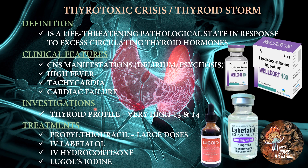The investigation for thyroid toxic crisis is a thyroid profile, in which we can see very high levels of T3 and T4 hormones. Treatment for thyroid toxic crisis includes propylthiouracil in large doses, IV labetalol, IV hydrocortisone, and Lugol's iodine. In this picture you can see hydrocortisone injection, in this picture labetalol injection, and this is the Lugol's iodine.